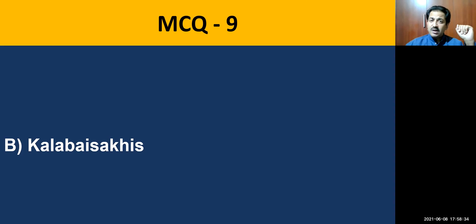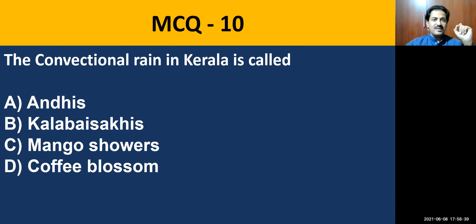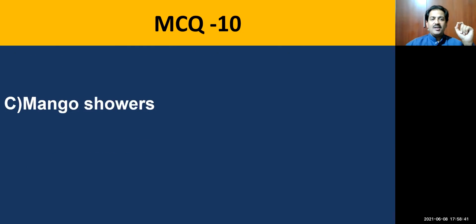MCQ question number ten: the conventional rain in Kerala is called mango showers, as I just mentioned.